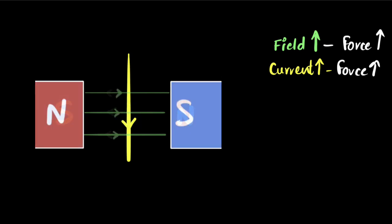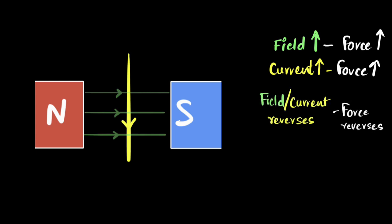And the same is the case if you reverse the direction of the current. If you reverse the direction of the current, it turns out that the force will again reverse. So the third feature that we find is that if you reverse the field or the current, then we find that this force will also reverse.